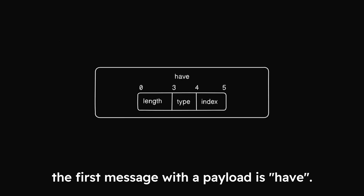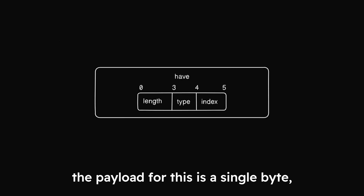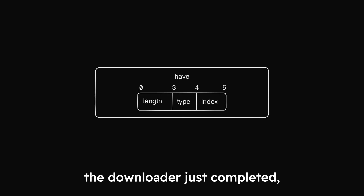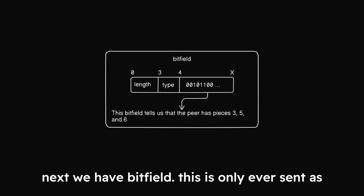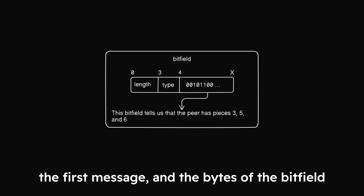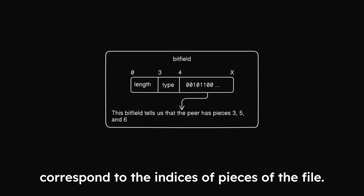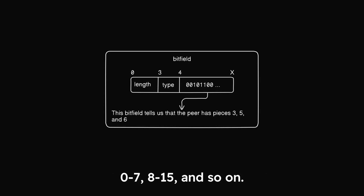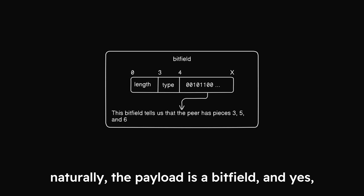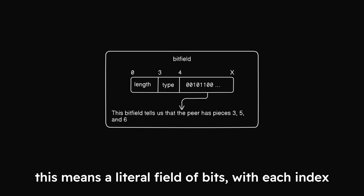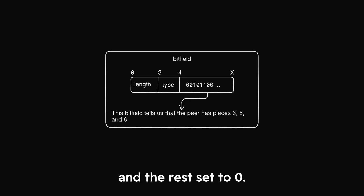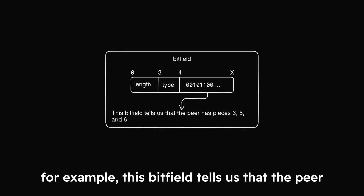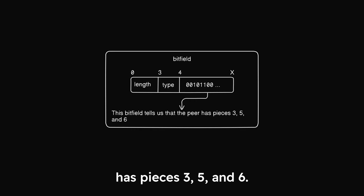The first message with a payload is Have. The payload for this is a single byte representing the index of the piece that the downloader just completed and checked the hash of. Don't forget that pieces are simply separate parts of a given file that the peer has. Next, we have Bitfield. This is only ever sent as the first message, and the bytes of the Bitfield correspond to the indices of pieces of the file — 0 to 7, 8 to 15, and so on. Each index of the piece that the downloader has is set to 1, and the rest set to 0. For example, a Bitfield might tell us that the peer has pieces 3, 5, and 6.